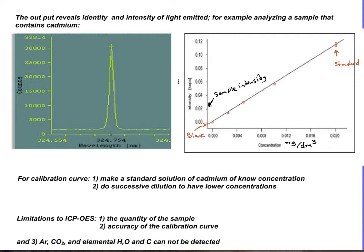Now in order to detect how much cadmium we have, we have to produce a calibration curve. So what the technician does is going to make a standard solution of cadmium of known concentration. In this case, our standard is at 0.02 milligram per decimeter cube of solvent.